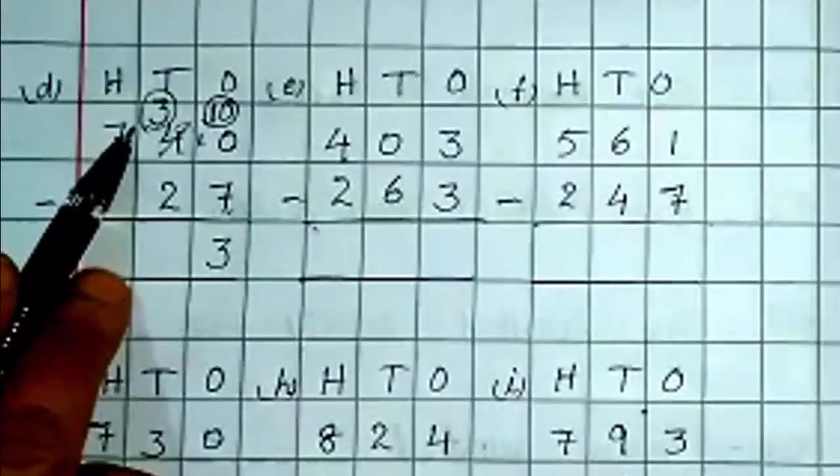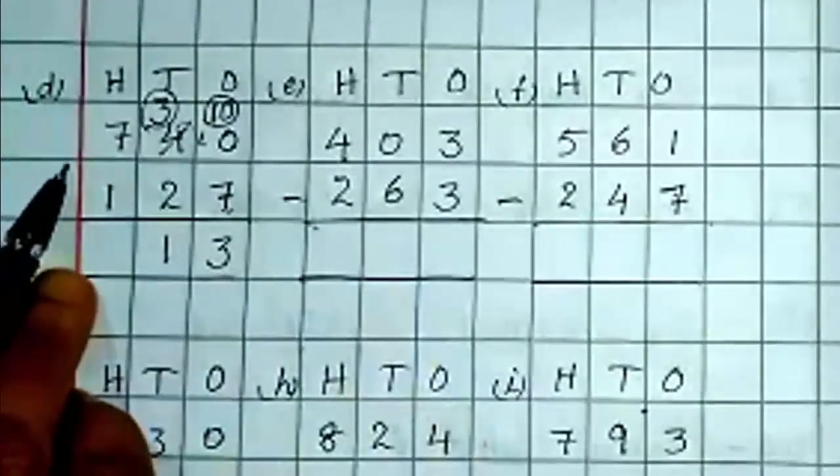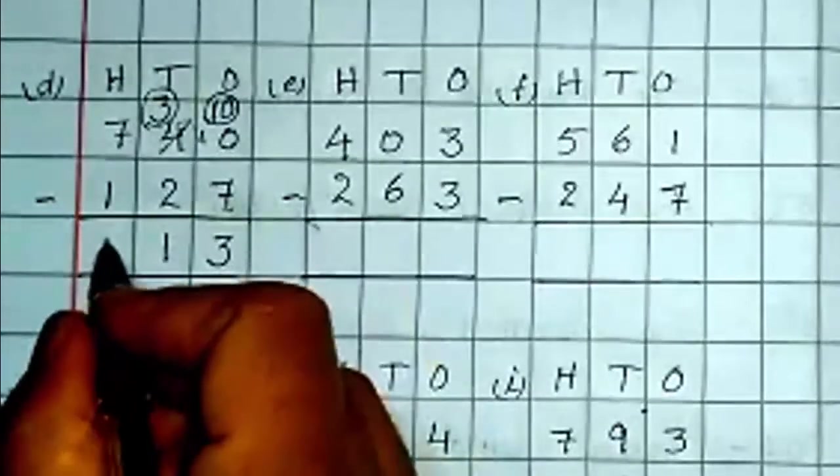Now on tens place you have 3. 3 minus 2 is 1. Now 7 minus 1, 6.